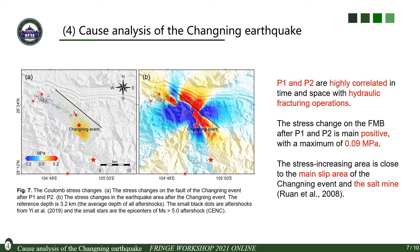We also obtained the stress change model on the Changlin earthquake fault after P1 and P2. The stress change is mainly positive with a maximum of 0.09 MPa. The stress increasing area is close to the main slip area of the Changlin event and the salt mine.